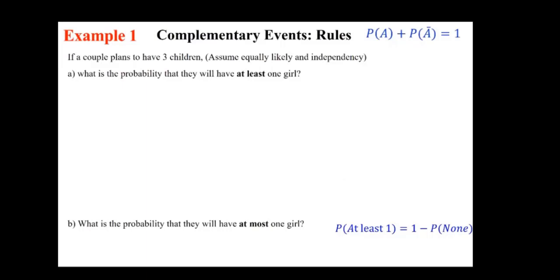Let's look at this example. If a couple plans to have three children, assume equally likely and independence. What is the probability that they will have at least one girl?